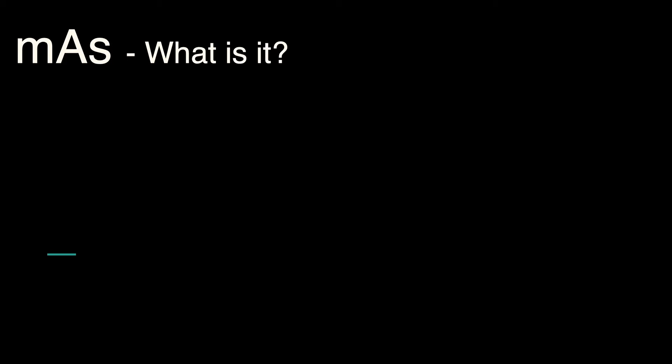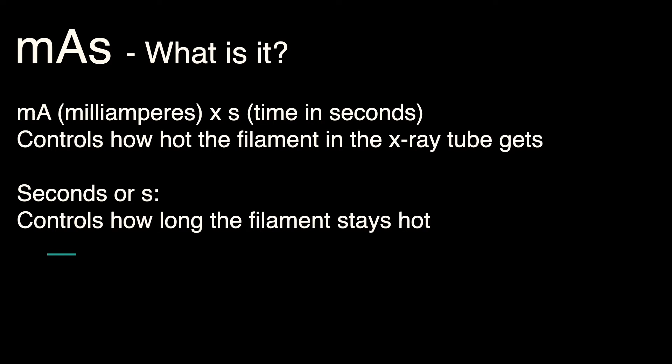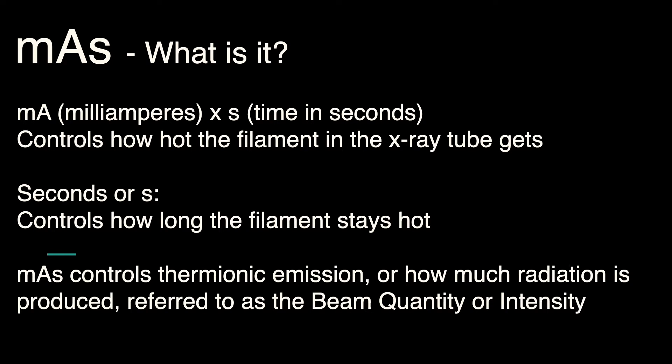First, mA and time. mAs is mA in time. mA is milliampers, time is time. So mA is how hot the filament gets. Time is how long the filament stays hot. Together, they are mAs, and they control thermionic emission, or the amount of electrons that are available to produce radiation.